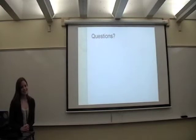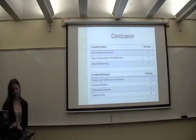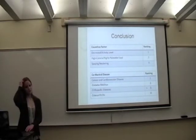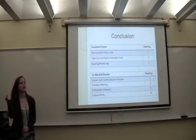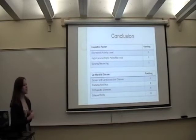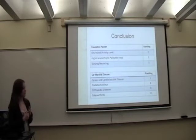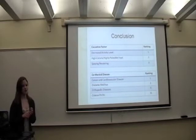A question was asked about the criteria for ranking the factors and diseases. For the causative factors, I looked at prevalence and which factor would cause the most weight gain. For the comorbid diseases, I looked at which disease is most likely to cause death and which caused the most reduced quality of life.